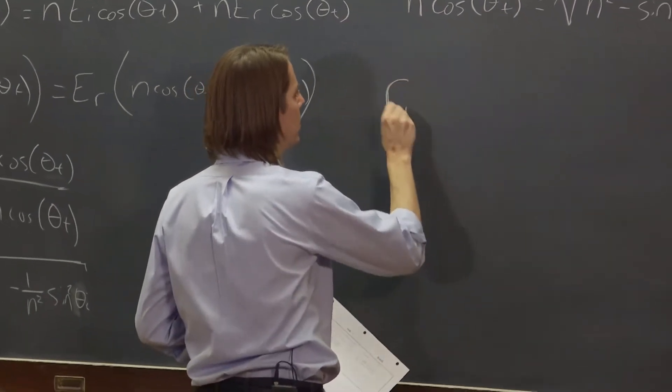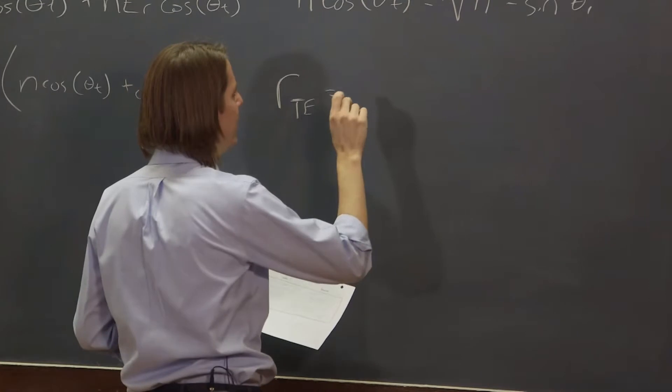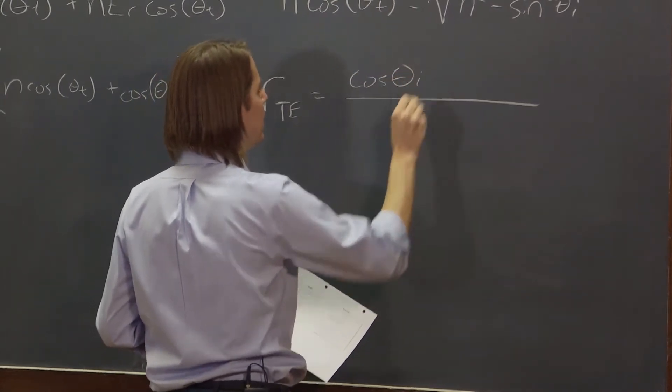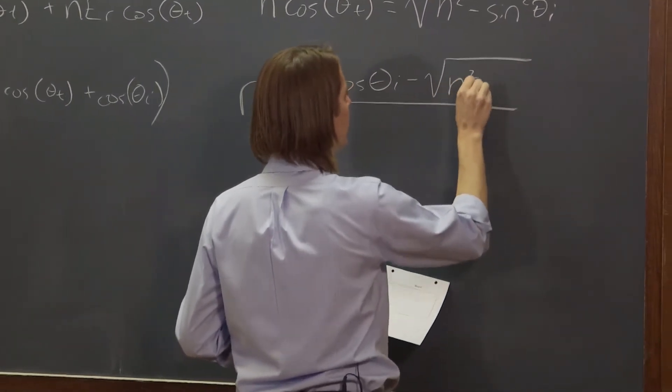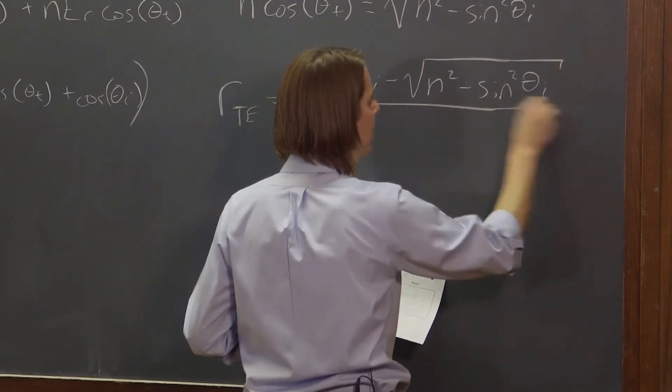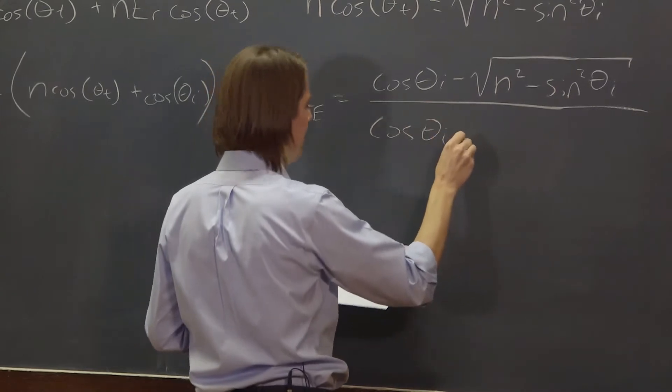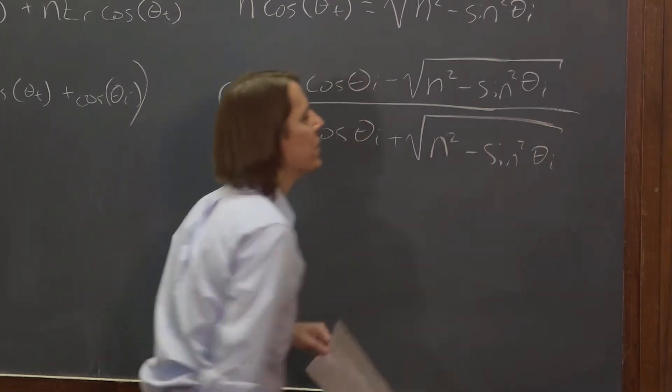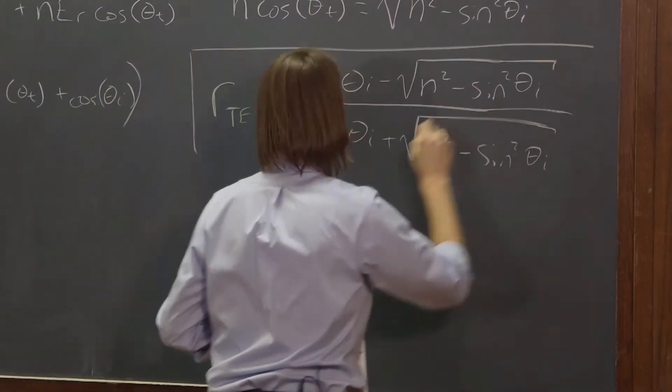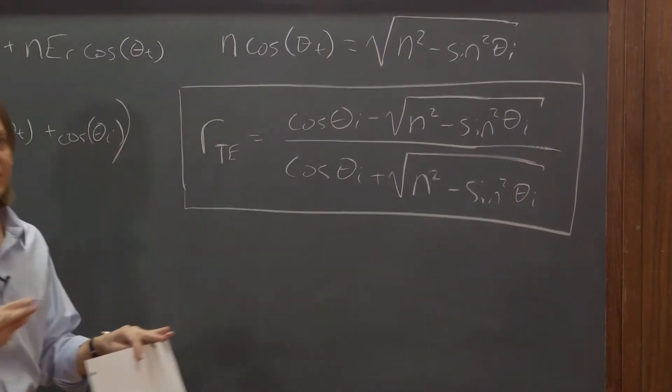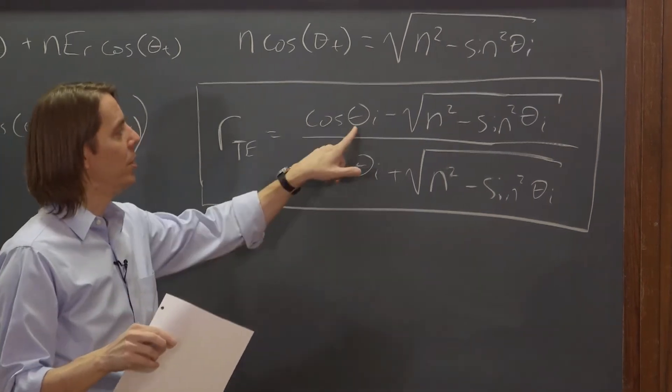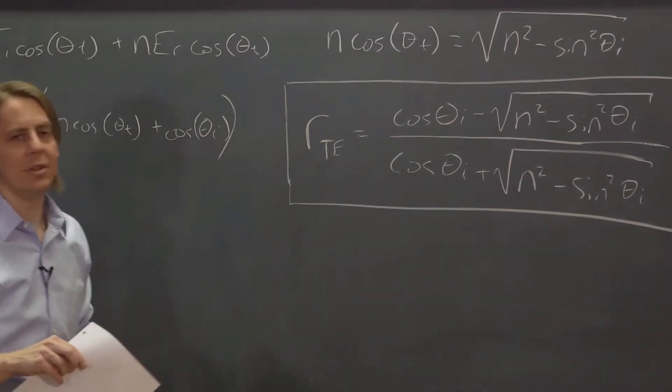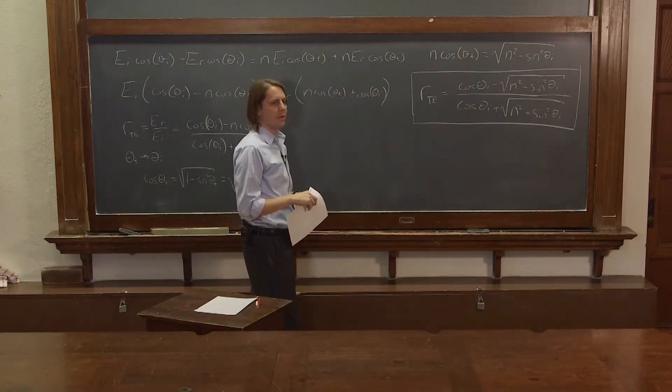So if you get all that done, then you write rTE, the reflection coefficient for TE light incident on a dielectric interface at some angle θ, is cosine θI minus the square root of n squared minus sine squared θI over cosine θI plus the square root of n squared minus sine squared θI. So not quite as pretty as over there. But now we have exactly what happens only in terms of a plane wave hitting an index, or hitting a dielectric interface. And really the only parameters are what angle does it come in and what is the index of the dielectric you're going into. If you know those two things, you'll know the ratio, you'll know how much the electric field amplitude will go down.